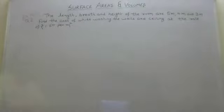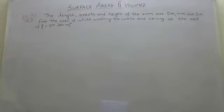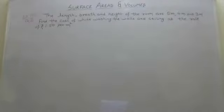The length, breadth and height of the room are 5m, 4m and 3m. Find the cost of whitewashing the walls and ceiling at the rate of Rs.150 per meter square.